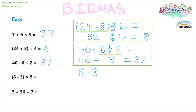Next one, we have eight minus three in brackets, multiplied by five. Looking at our BIDMAS, we have brackets, subtraction and multiplication. The bracket is the bit we need to do first. So the first thing we need to do is eight minus three, which is five, times by five, gives us 25.